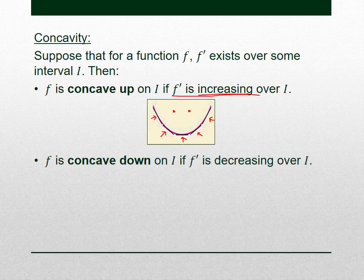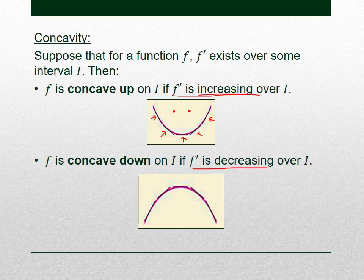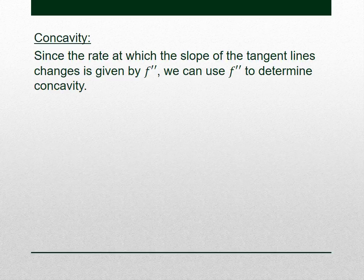The opposite of that is called concave down, where the derivative is decreasing. Concave down looks like a frown. If the derivative is decreasing, the slopes of the tangent lines are decreasing — starting positive on the left, going to zero, then becoming negative. So the slopes are decreasing and the derivative is decreasing. That's what it looks like when a function is concave down.